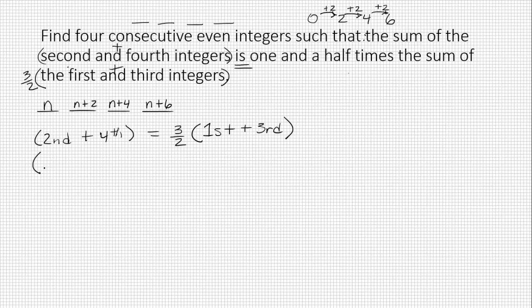So let's try plugging these in. We've got the second number plus the fourth number is equal to three halves times the first number plus the third number. Okay, let's see what we can simplify.